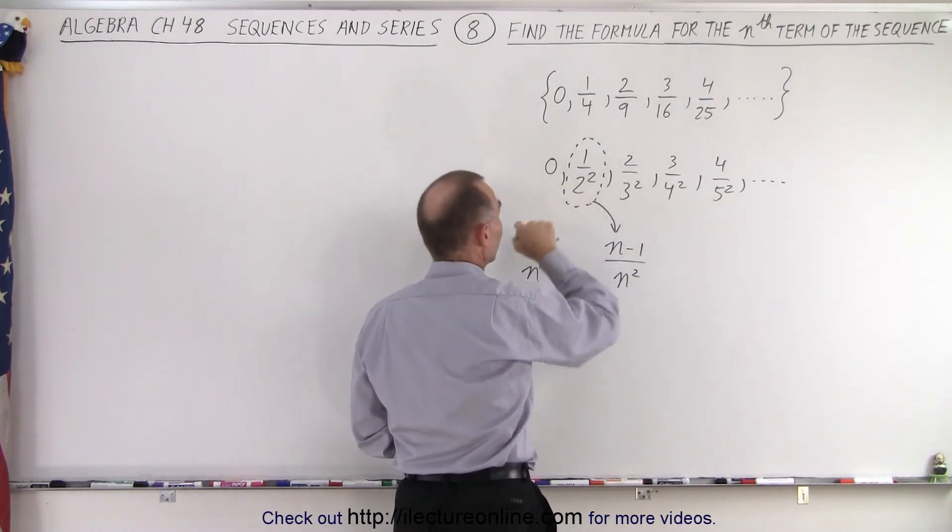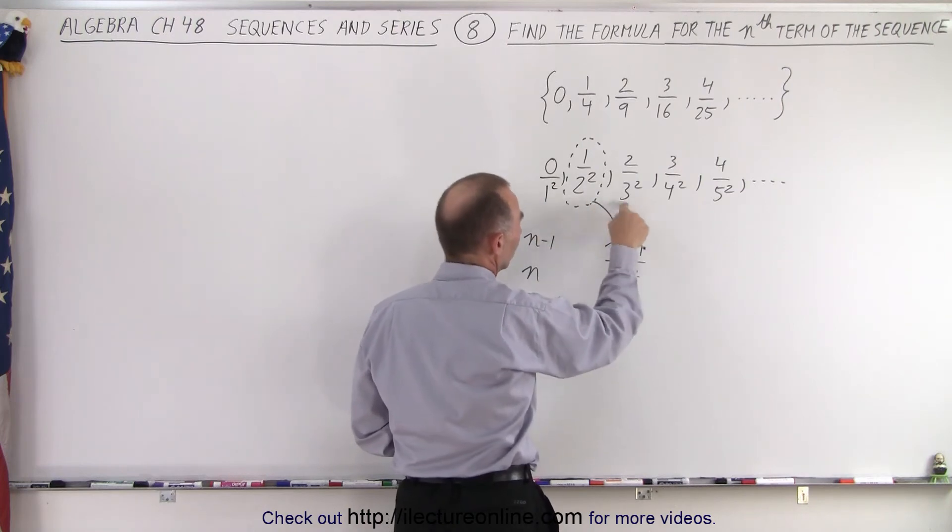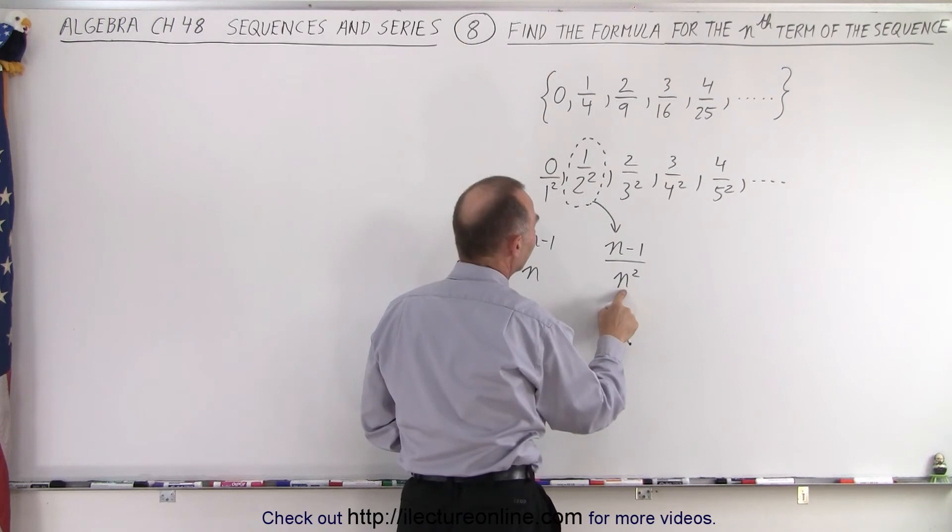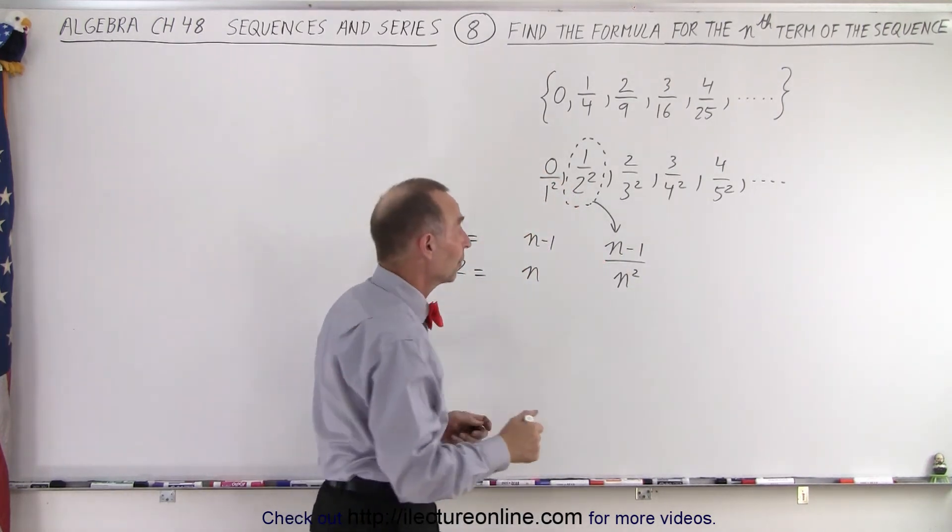But how about the first term? Well, notice that we can write this as 1 squared in the denominator, because it's 1 squared, 2 squared, 3 squared, 4 squared, and 1 can be represented by N, and N minus 1 would be 0. So that also works for the first term.